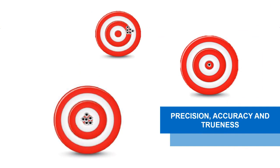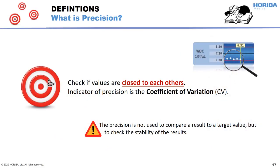Now we know the specificities of the target values. I would like to clarify some basic notions, as precision, accuracy, and trueness are sometimes confused. First, precision: precision compares the closeness of the results between each other. Its aim is to assess the stability of the system — to see if different runs of the same control sample give the same results.